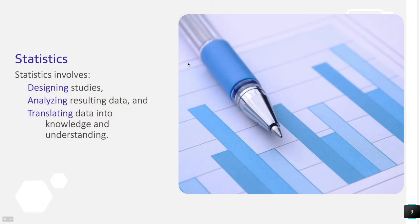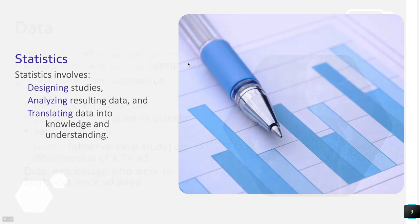So what is statistics? Statistics involves three different things: designing the studies — how we're going to collect the data and how we're going to sample — then actually going out and sampling; analyzing the data we get from that sampling; and then translating those statistics from our analysis into what they mean for the entire population. That gives us knowledge and understanding about the entire population.